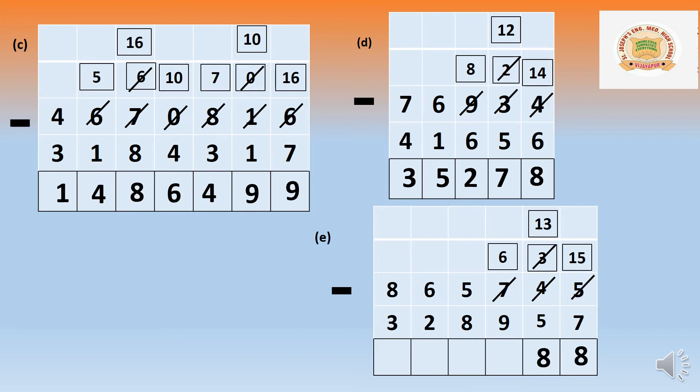In the hundreds place: 6 cannot minus 9. Borrow from thousands — the 5 becomes 4, and the hundreds become 16. Sixteen minus 9 is 7.